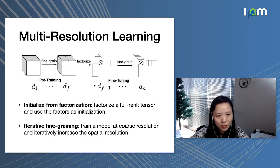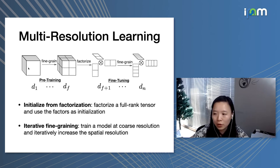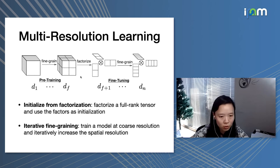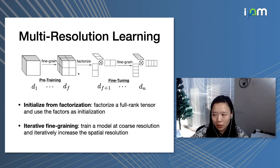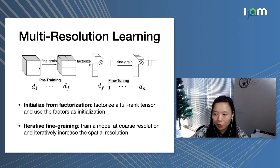The key idea behind this process is multi-resolution. For both pre-training and fine-tuning stages, since we're working with spatial data, we can refine along the spatial dimension from an initial coarse-grained resolution to a fine-grained resolution. We can always use the solution from the coarse-grained resolution as an initialization for the next resolution, repeating this fine-graining process iteratively. With multi-resolution learning, the same strategy applies to both stages. In pre-training, we fine-grain on the full tensor, whereas in the fine-tuning stage, we fine-grain on the latent factors.